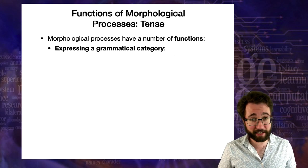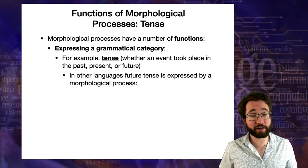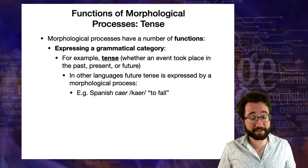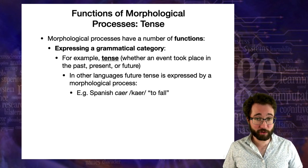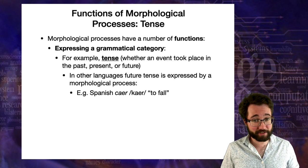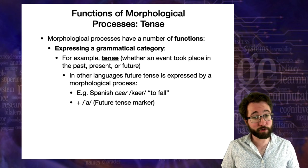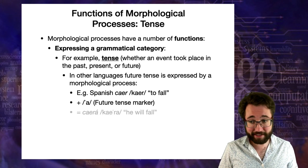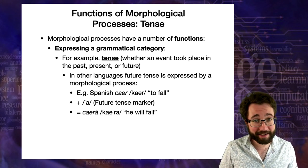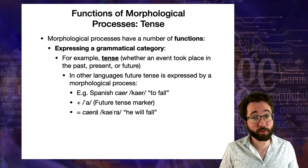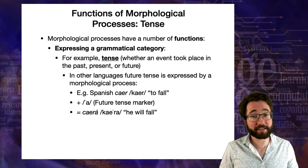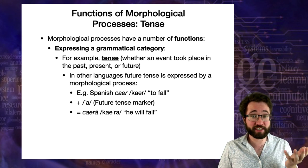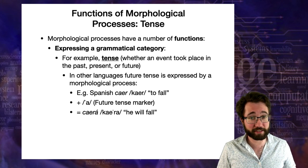In other languages, the future tense is often expressed using a morphological process. For example, in Spanish the verb 'caer' (to fall) has its future tense expressed by adding a suffix, giving something like 'caerá', which means 'he will fall'. So in Spanish the future tense is expressed using a suffix, whereas in English the future tense is not expressed using a morphological process.